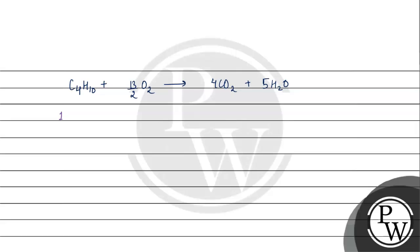If we have seen this reaction, 1 mol of butane reacts with 6.5 mol of oxygen to form 4 mols of carbon dioxide and 5 mols of water.